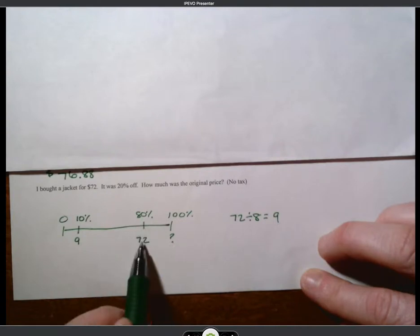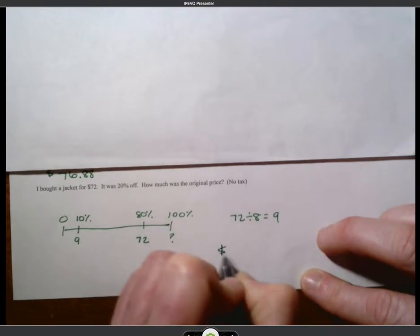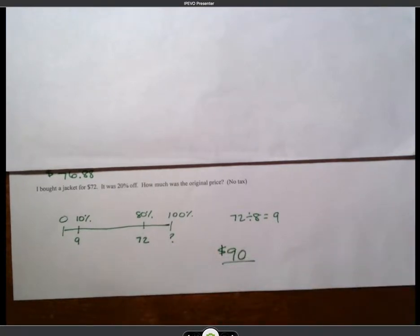Well, if 80% is 72, then 100% is going to be 90. Right? If 10% is 9, 100% would be 90. So there you go.